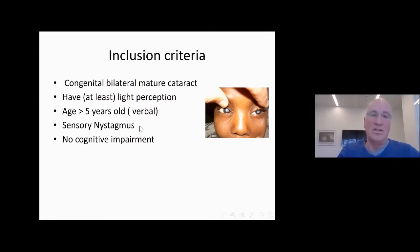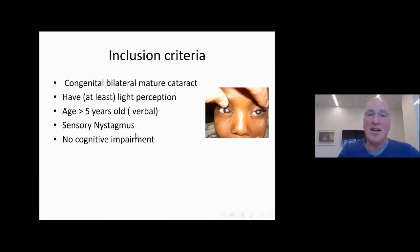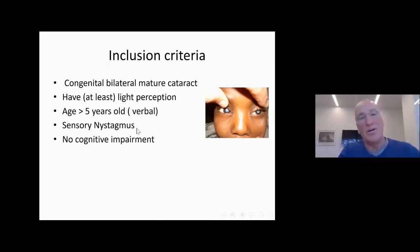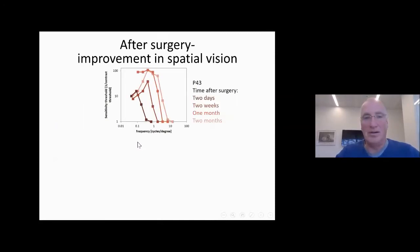Since we have not seen these kids at birth, we rely on their nystagmus as a sign that the cataract developed early — very early. We cannot say with complete assurance that this is from birth, but it's within a few months from birth. If you don't treat these kids by six months or so, they typically develop nystagmus. The last criterion is that they have no cognitive impairment.